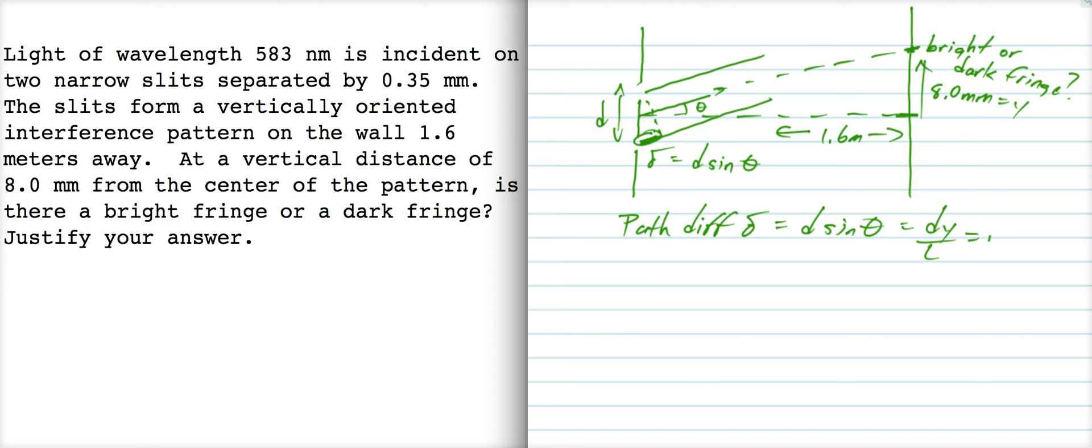What we're going to do is we're going to set that equal to M lambda, and we're going to find M. So that if M is, you know, a half or one and a half or two and a half, then it's dark, and if M is one, two, or three, then it's bright.